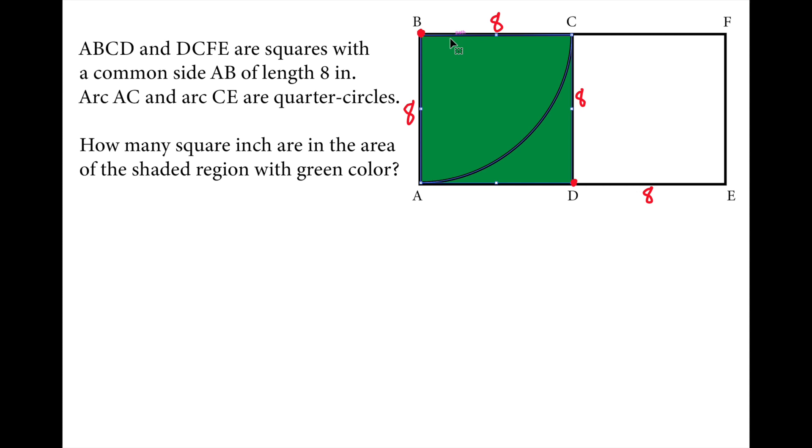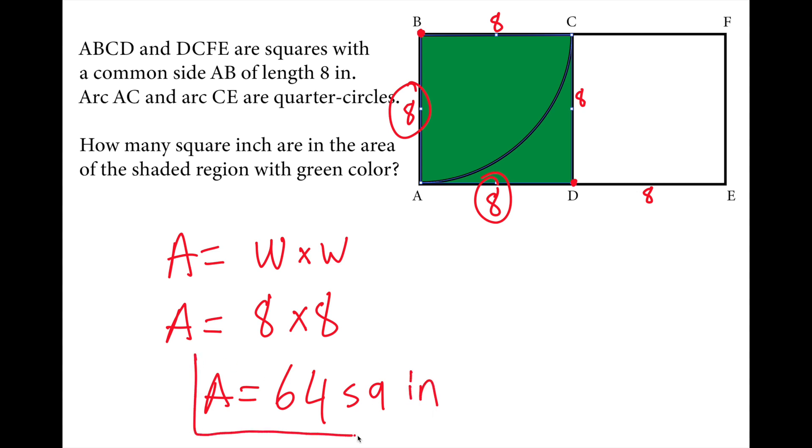How do we calculate the area of the square here? Area of the square is calculated by width times width. We have all sides equal to 8, so the area of that green section is 8 times 8 equals 64 square inches.